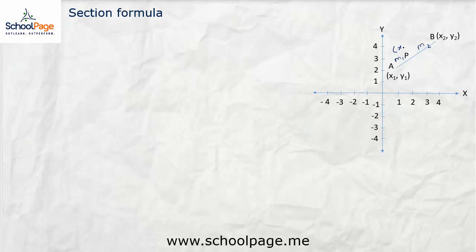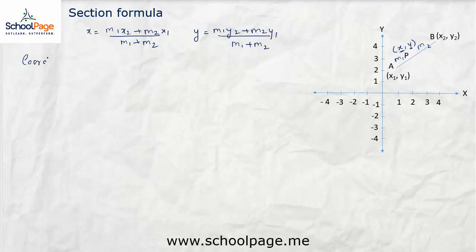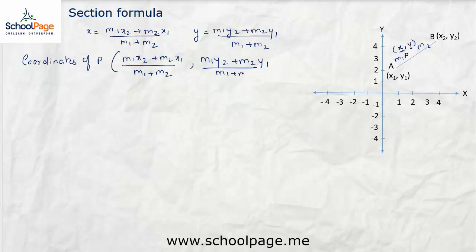Let the coordinates of point P be (x, y). Then by the section formula, we can say that x = (M1·x2 + M2·x1) / (M1 + M2) and y = (M1·y2 + M2·y1) / (M1 + M2). So the coordinates of point P are ((M1·x2 + M2·x1) / (M1 + M2), (M1·y2 + M2·y1) / (M1 + M2)). This is the section formula.